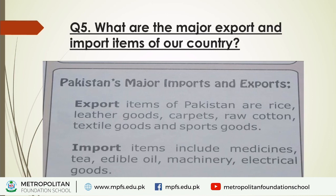Karachi is the biggest industrial city of Pakistan. Other industrial cities include Lahore, Faisalabad, Hyderabad, Kotri, Gujranwala, Gujrat, Sialkot, and Multan.